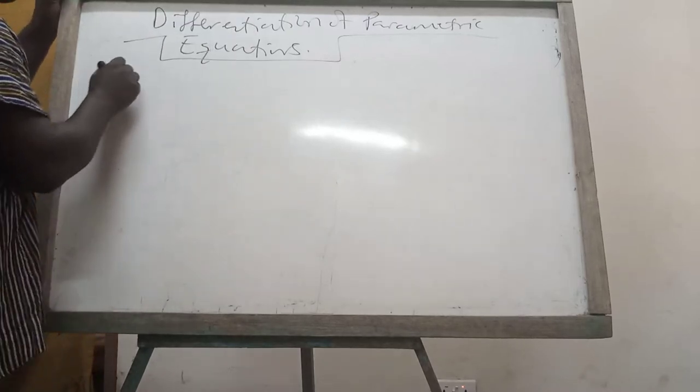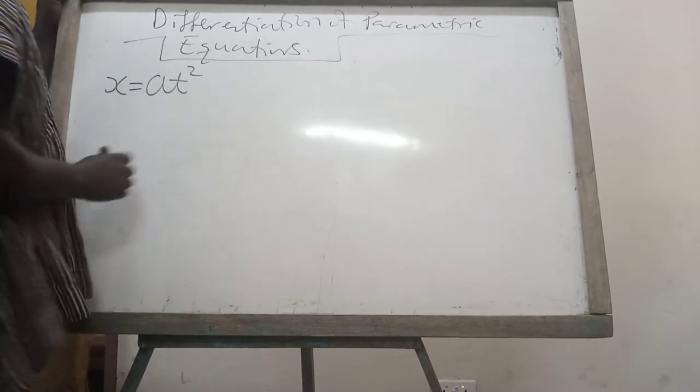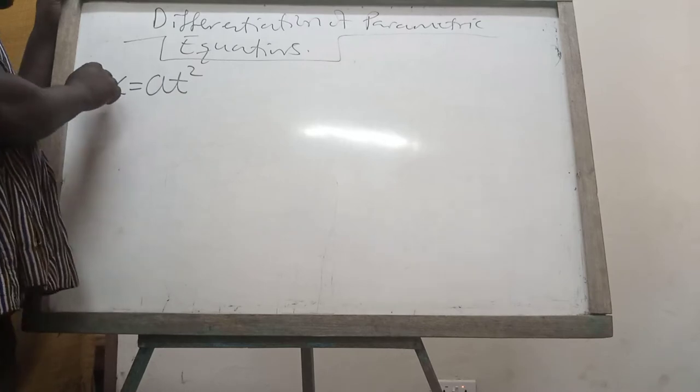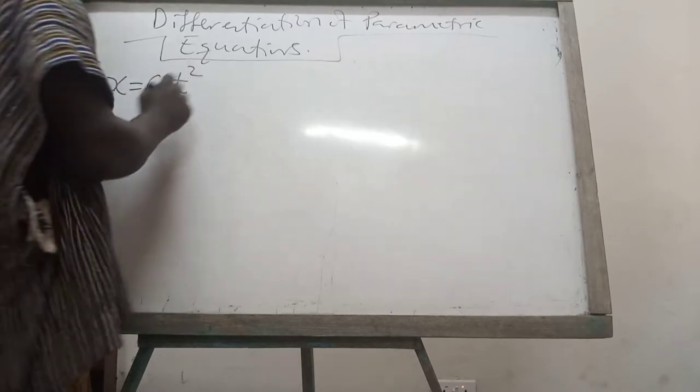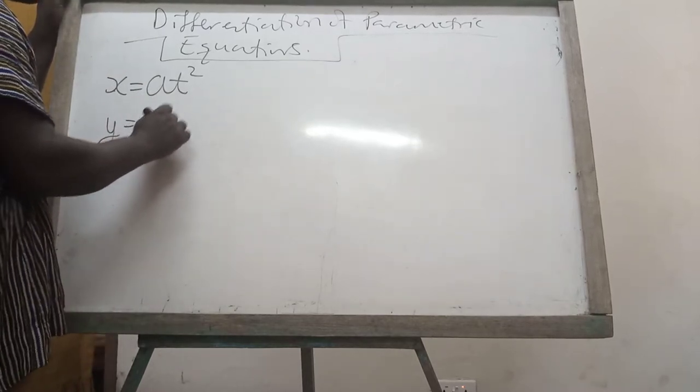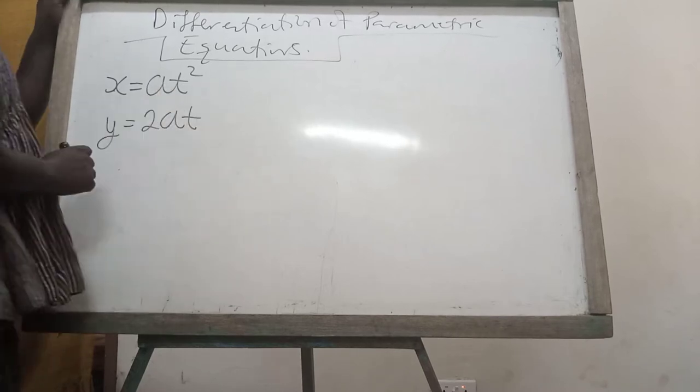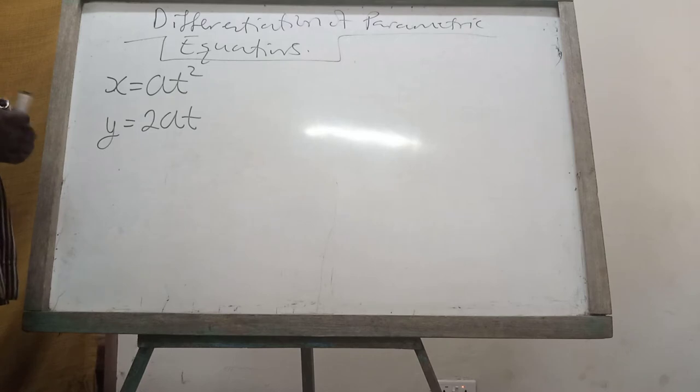Say x giving us at squared. That is, the x part is in a different parameter t. And say the y part is also maybe 2at. The parameter here that we are talking about is t.